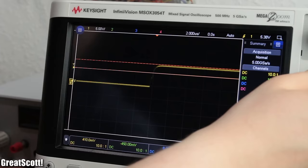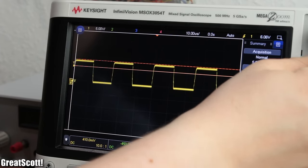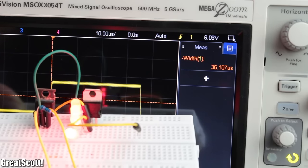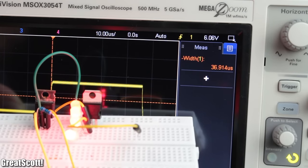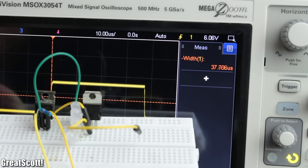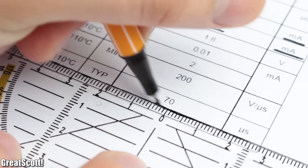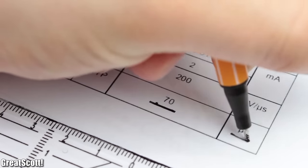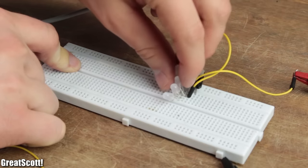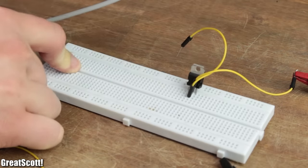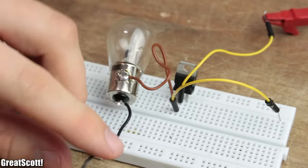While the MOSFET turns on and off constantly, here the thyristor does stay conductive until a certain critical time of around 37 microseconds is reached. That is the so-called turnoff time which the thyristor needs to reach its non-conductive state.